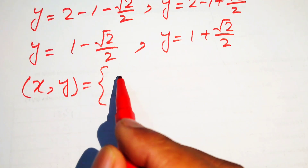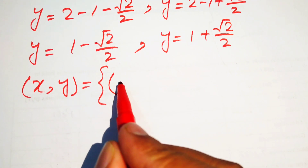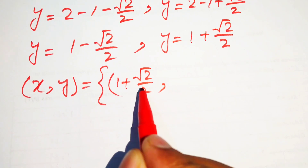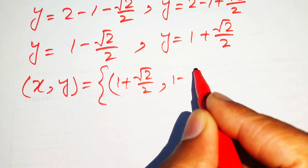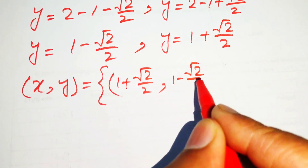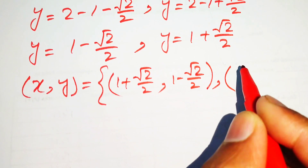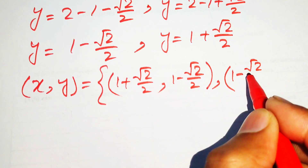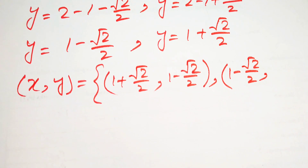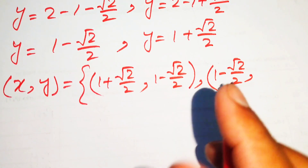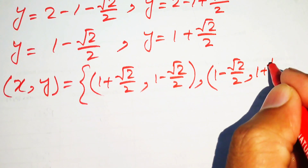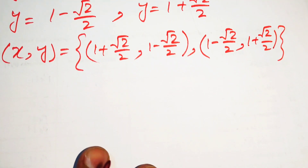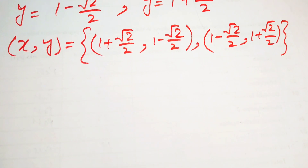Finally, the two solutions of the given system are: first solution, x equals 1 plus square root of 2 divided by 2 and y equals 1 minus square root of 2 divided by 2; second solution, x equals 1 minus square root of 2 divided by 2 and y equals 1 plus square root of 2 divided by 2.